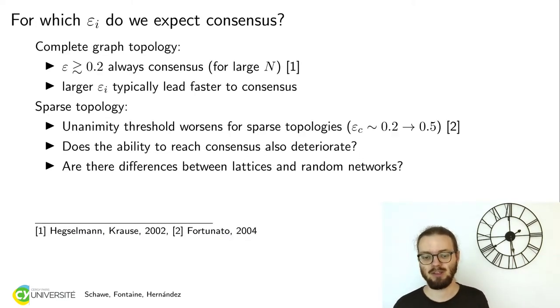So what do we know about this? On a complete graph, we will always get consensus if the confidence is above a threshold value of about 0.2. On sparse topology, much less is known. One study looked at unanimity and found that you only get unanimity and always unanimity if you are above 0.5. So it's far harder to reach unanimity in sparse networks. We are interested not in unanimity because that is a very specific case, but we would rather study consensus where not every single agent has the same opinion, but the vast majority of the system has the same opinion.